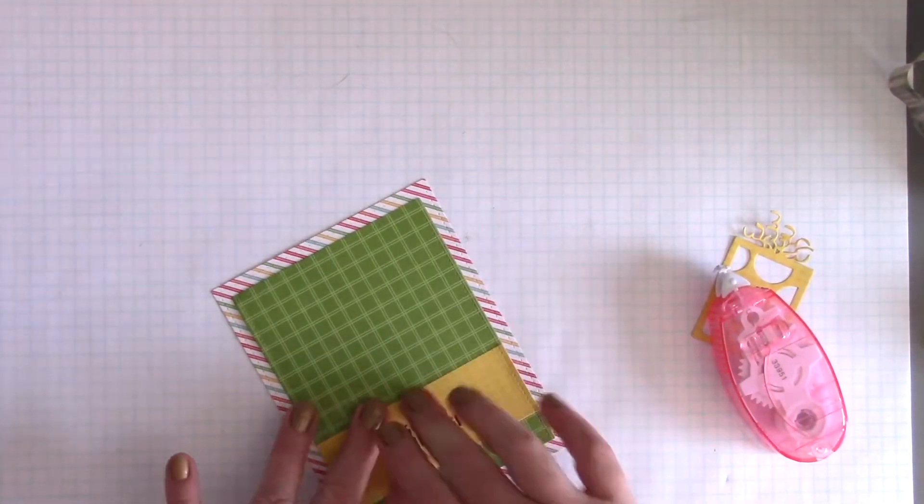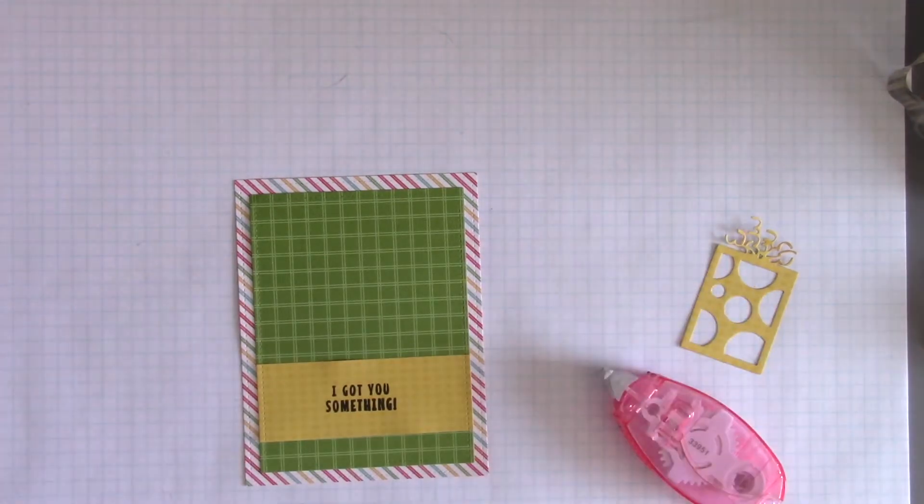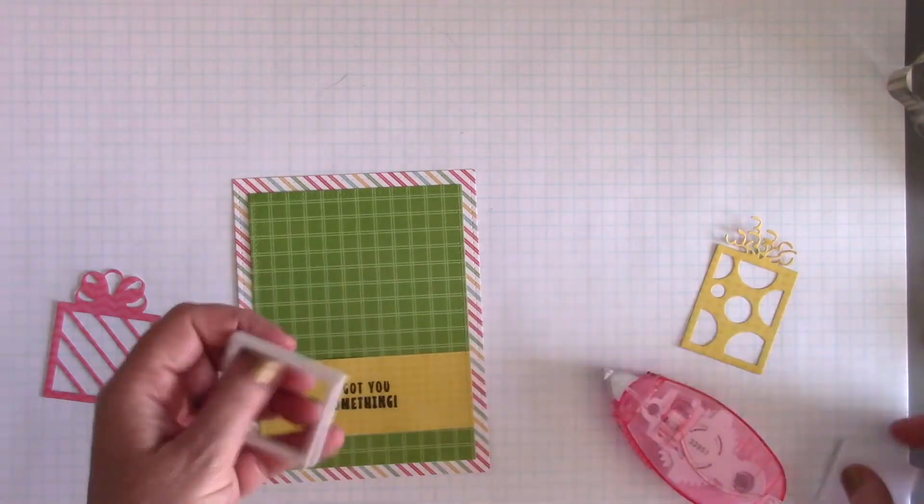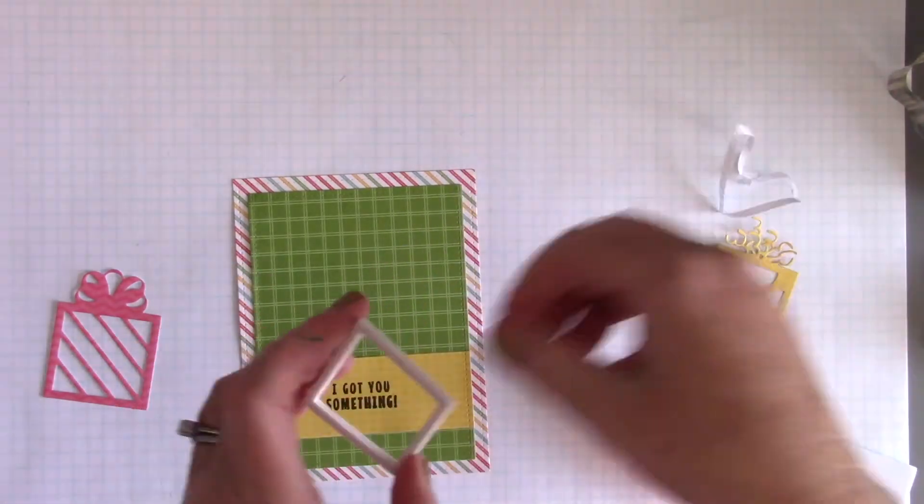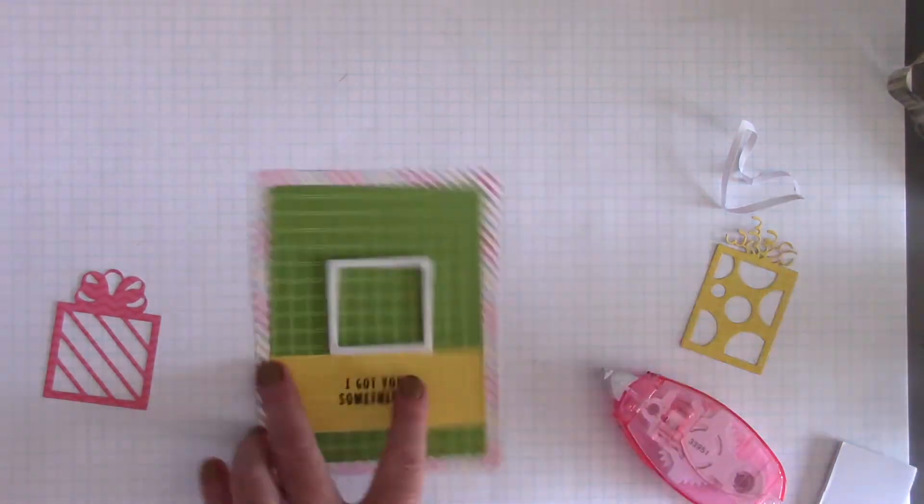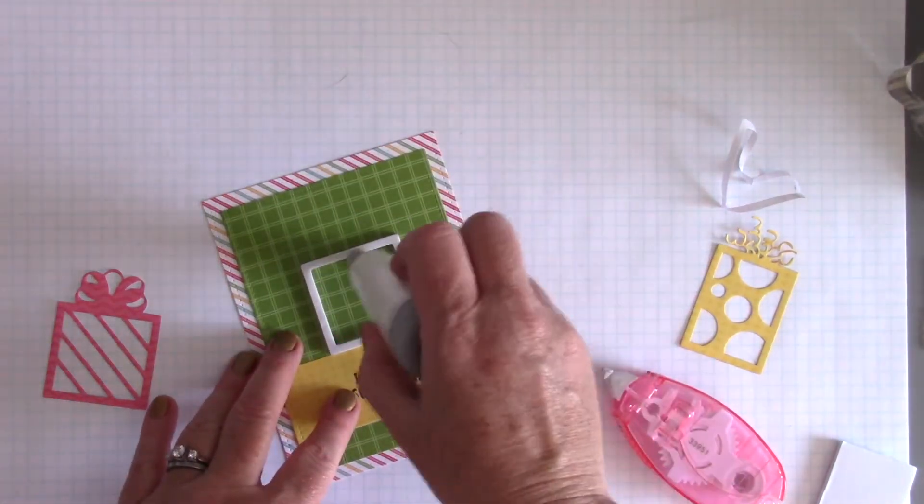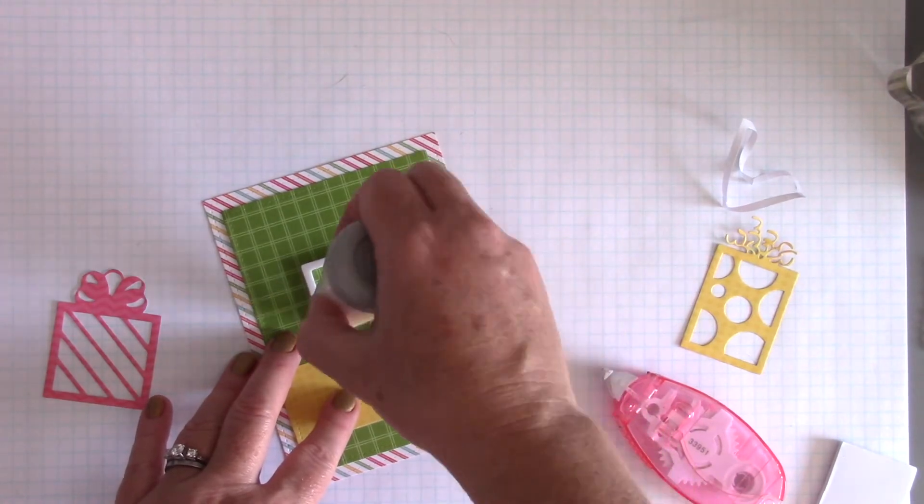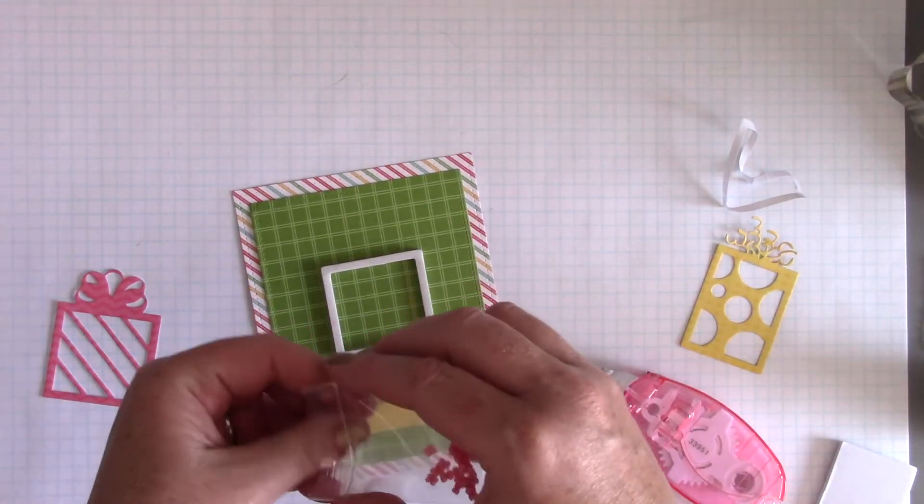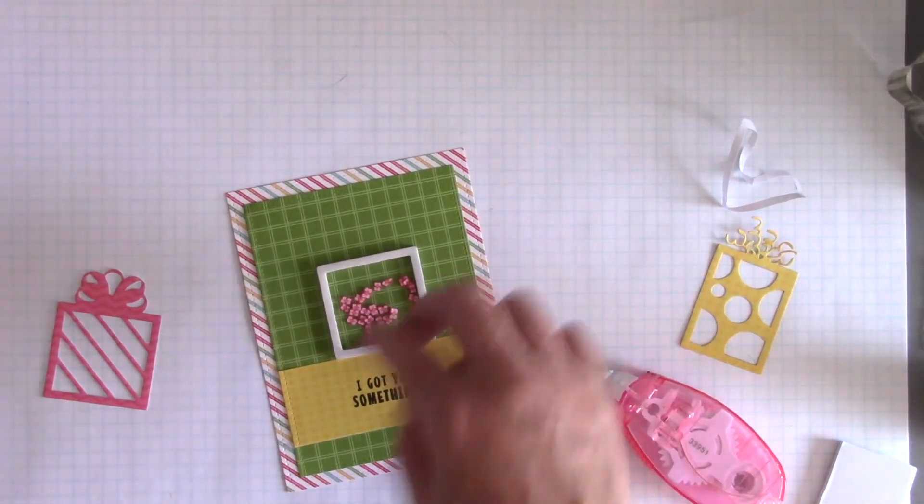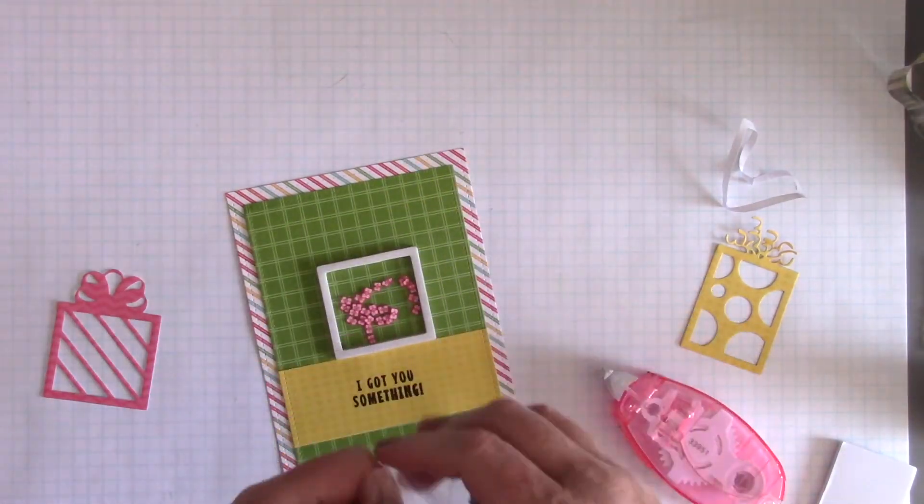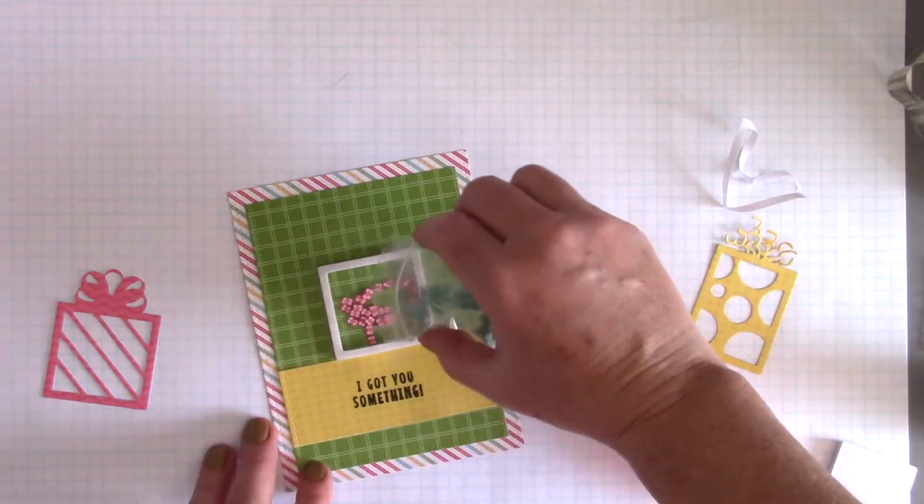And then all I need is to add my shaker element. So I have that square present. I'm gonna pop out the center of the foam, remove the backing and adhere it to my card panel. Then I'm going to take some of the anti-static, run it around the inside of that little frame there and make sure that my sprinkles move around really well. Then I'm going to fill up the little inside of the shaker element there with as many toppings as I like. I'm gonna use a couple of different colors in this one. I really like the way that looks too.